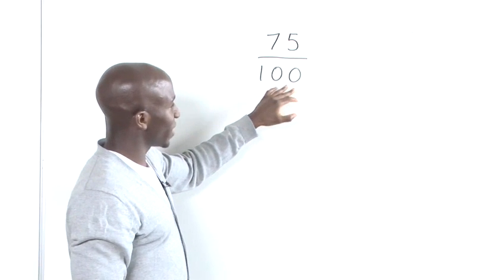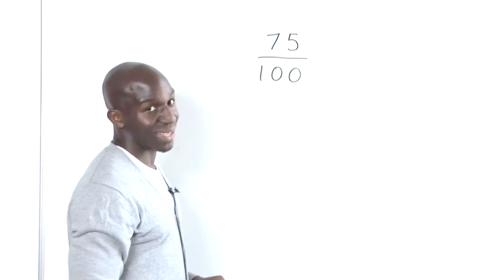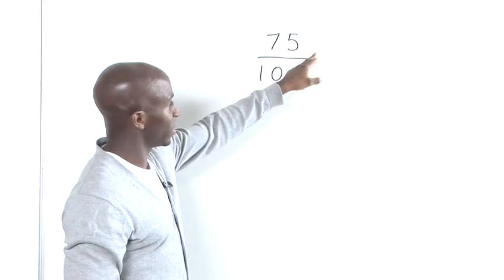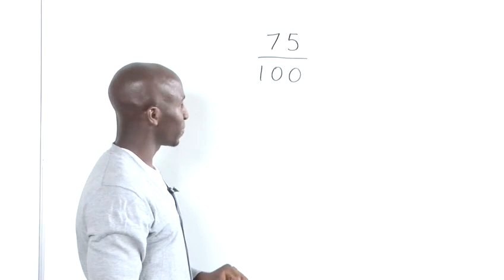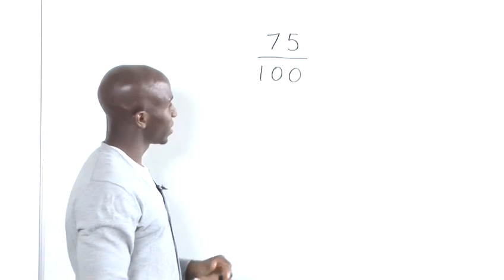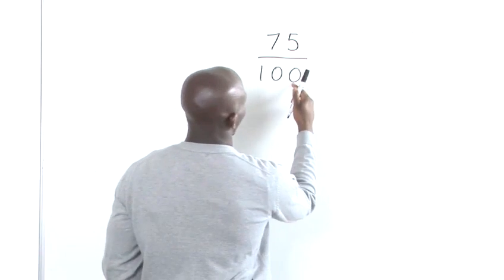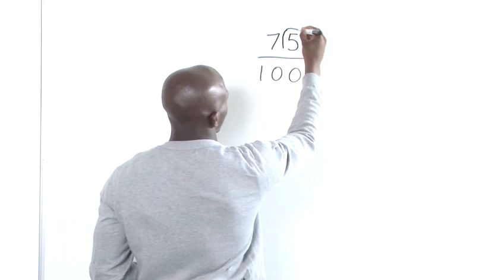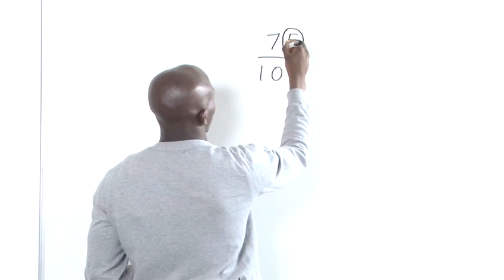So, when you're dividing by zeros, all it has the effect of doing is moving the decimal point on the numerator to the left twice. However many zeros you see, that's how many times you have to jump. So, the first zero, we jump here. The second zero, we jump here.